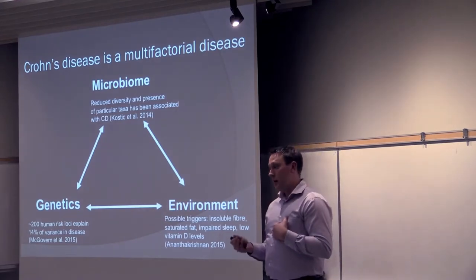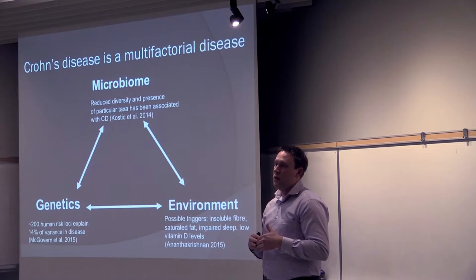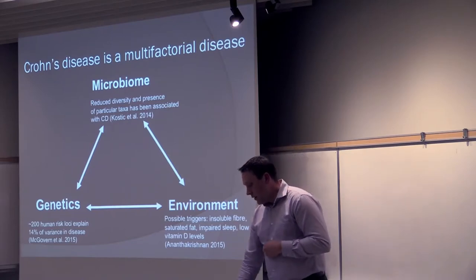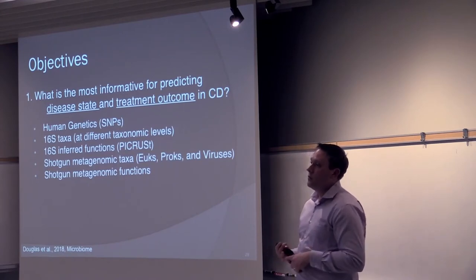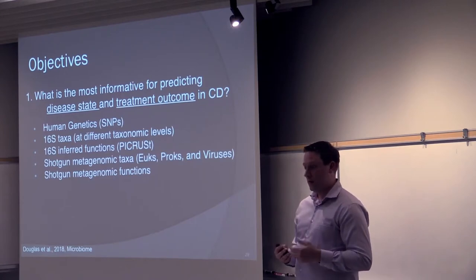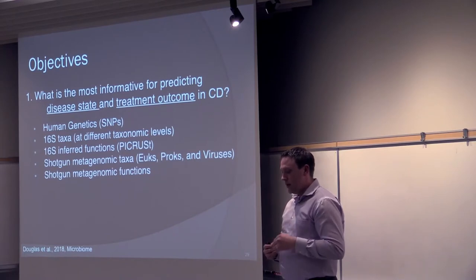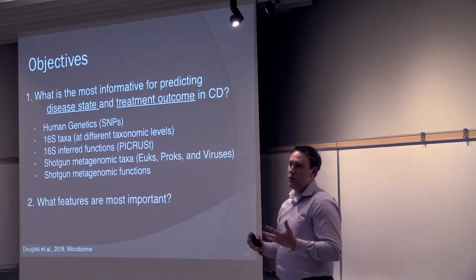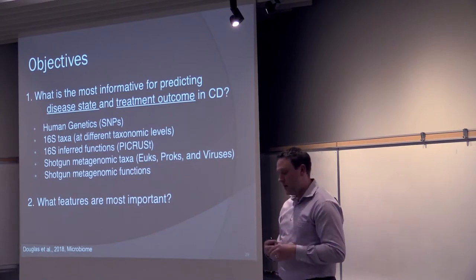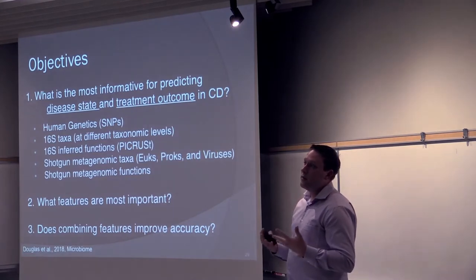And there's been a lot of microbiome research on IBD that's coming out all the time. And one common theme in that is basically we see this reduced diversity, so reduced number of species in Crohn's disease. And that actually happens in a lot of different diseases. So in this study, our objectives were sort of to look at what's the most informative data type for predicting both Crohn's disease from controls and also predicted treatment outcome in Crohn's disease. And so what we wanted to look at was, what we did look at was human genetics. So we looked at SNPs from these patients. We looked at 16S taxa, 16S inferred functions from PyCrest, shotgun data, and shotgun metagenomic functions. So we wanted to ask which one of those was the best. We also wanted to ask within each of those what features were the most important, because that gives us some insight into the disease and the mechanism. And then three, does combining these different types of information lead to a better accuracy and also a better insight into the disease.